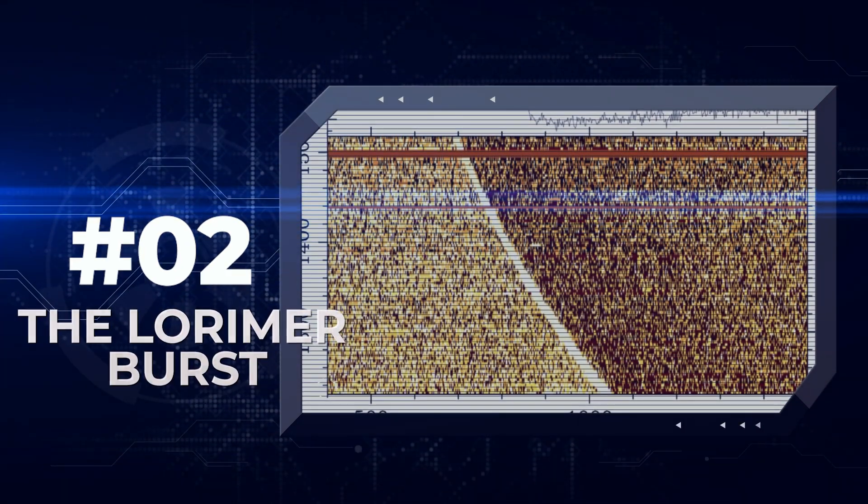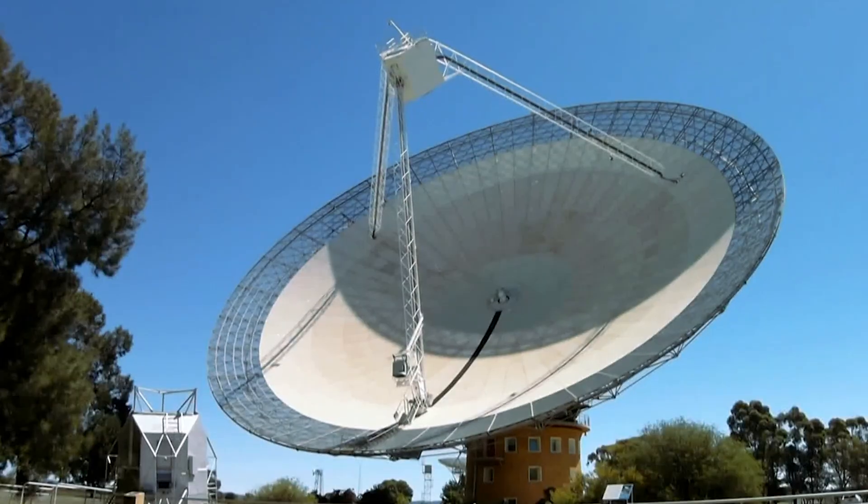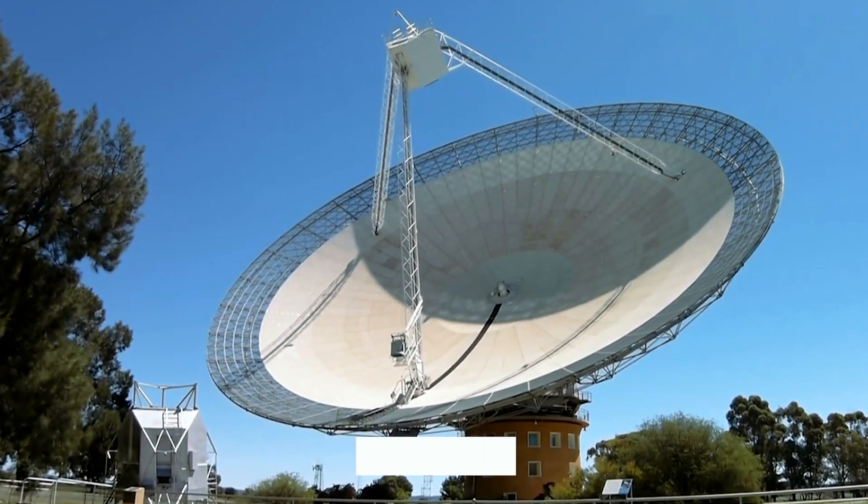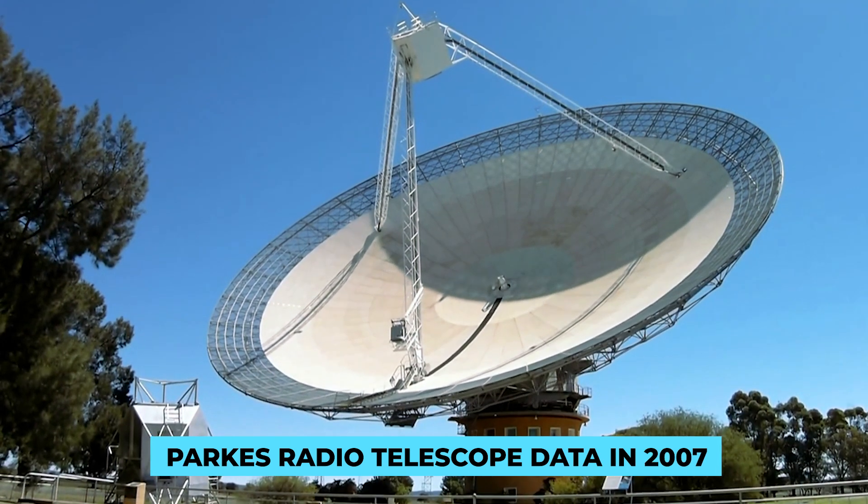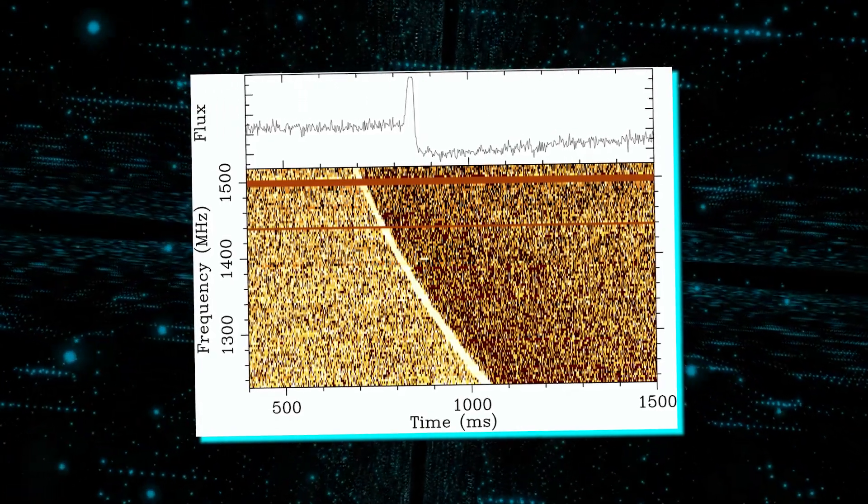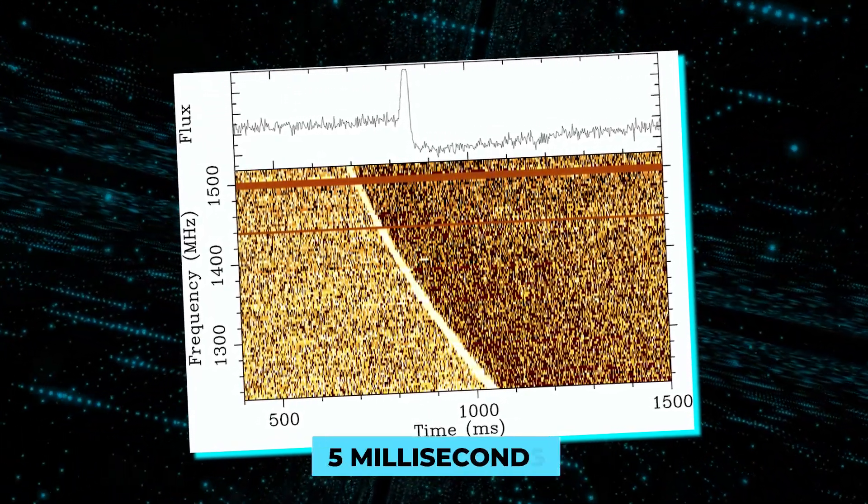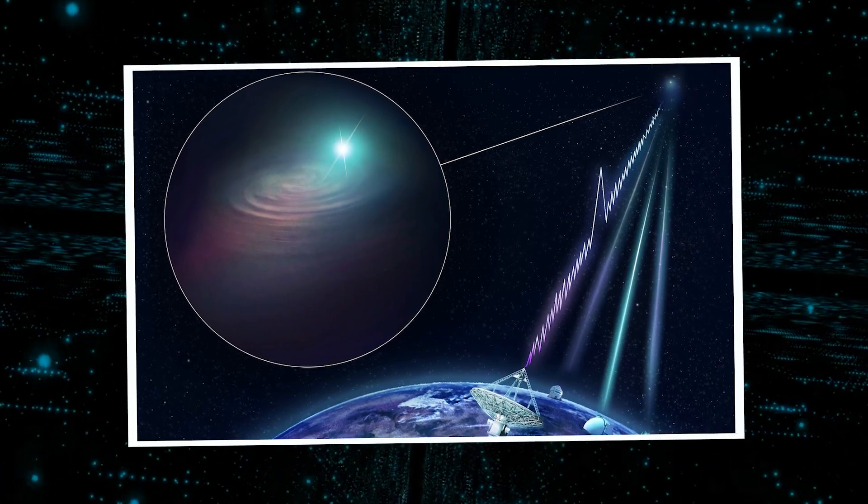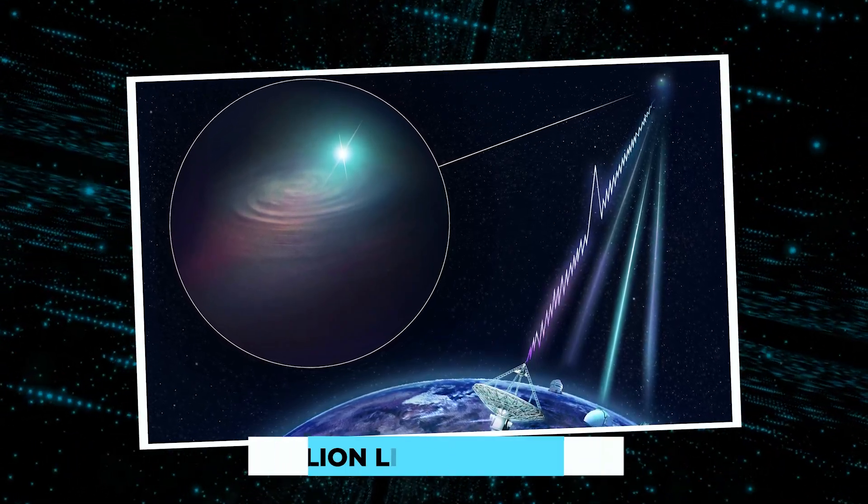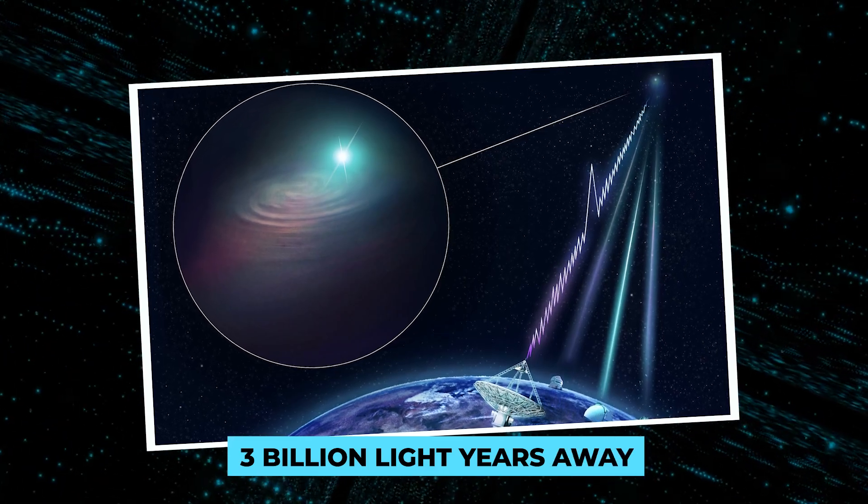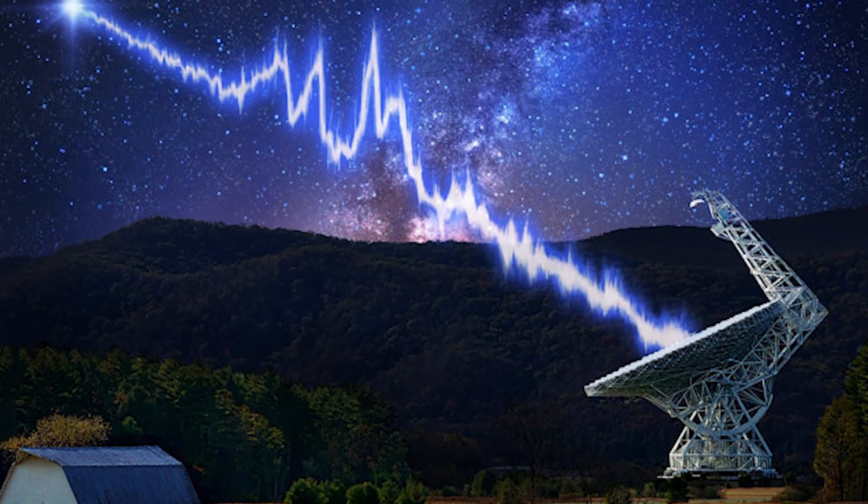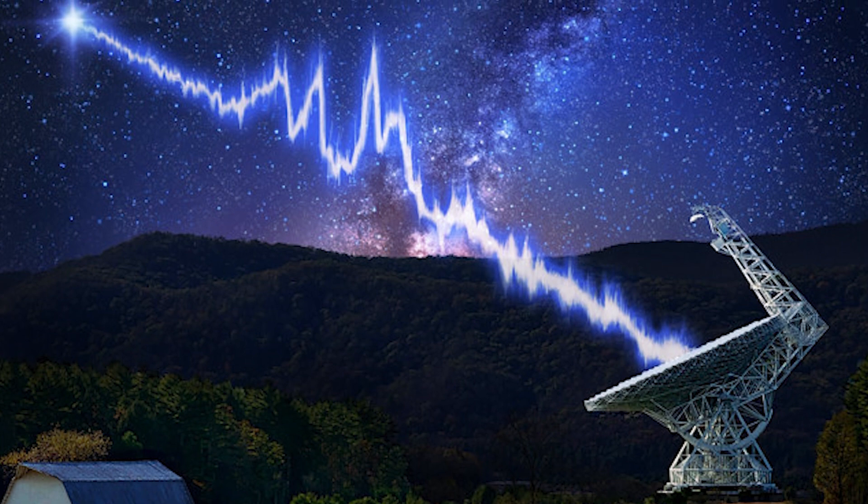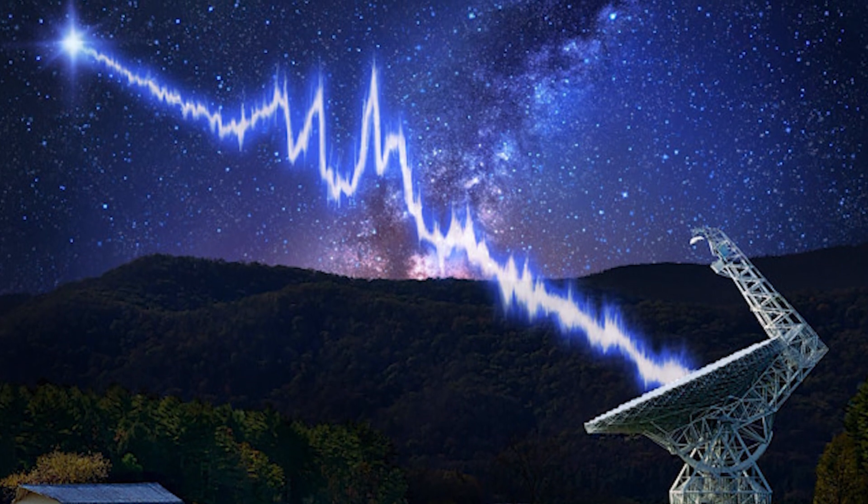Number 2. The Lorimer Burst. Duncan Lorimer, a radio astronomer, made an intriguing discovery while sitting through Archive Park's radio telescope data in 2007. He came across a strange occurrence, a brief burst of radio waves that lasted only 5 milliseconds, but shone as brightly as a million suns. This burst came from a distant galaxy located about 3 billion light-years away. It was the first instance of what we now call a fast radio burst, a previously mentioned phenomenon.